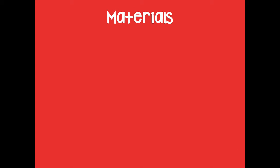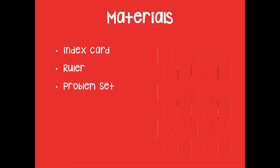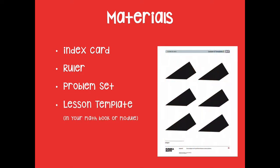First let's talk about the materials you're going to need. You're going to need an index card so you can use that as your right angle tool, like we did in the previous lessons. A ruler so you can draw shapes with the same side lengths. Your problem set and then this lesson template, which is in your math book or in the module you can download.